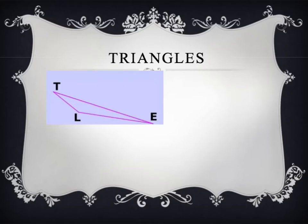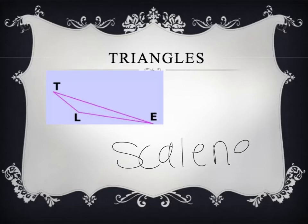Finally, we have the odd ball of the triangles — this is the scalene triangle. Scalene triangles have nothing in common. All of their angles are different, and all of their sides are different lengths. You can tell that it's a scalene triangle when it has no consistency, nothing the same.